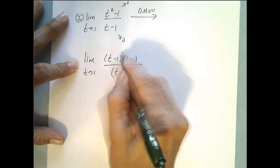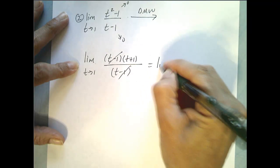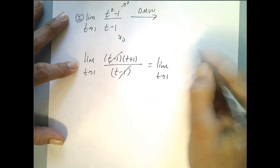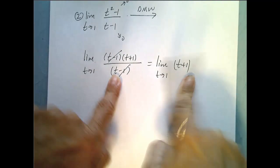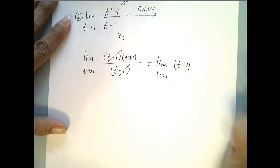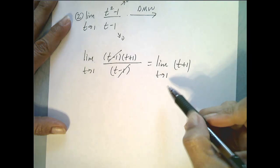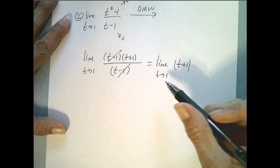Now remember we can cancel these, and that limit is equal to this limit because these functions are equivalent everywhere except at 1. And the limit is for all values near 1 and not at 1.